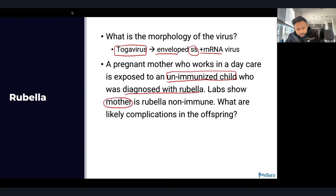As a test-taking strategy, whenever a vignette gives you three or more medications in the patient's past medical history, think about two things: first, are they testing you on the side effect of a drug? Second, is there a CYP interaction? For example, a CYP inducer in the medication list combined with warfarin — CYP induction means your warfarin will not be working as well.